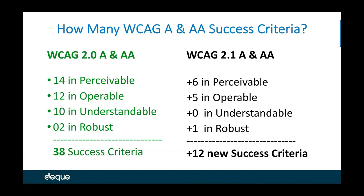WCAG 2.1 adds 12 new success criteria. See how they fall: 6 in perceivable, 5 in operable, 0 added to understandable, and 1 added to robust. These 12 new success criteria are great to pick up now — I have clients proactively picking them up in design phases to make sure they do it before launching their next design.